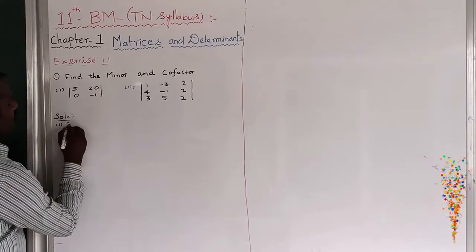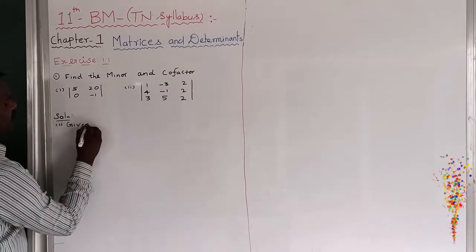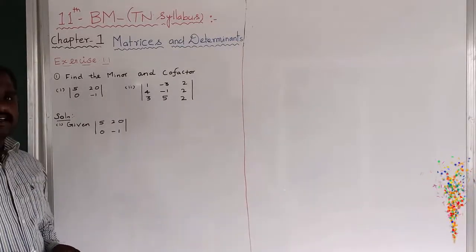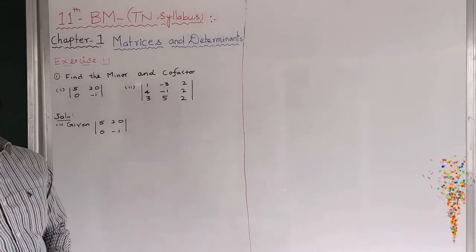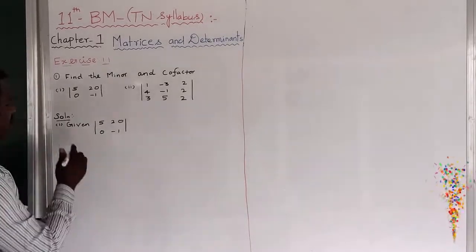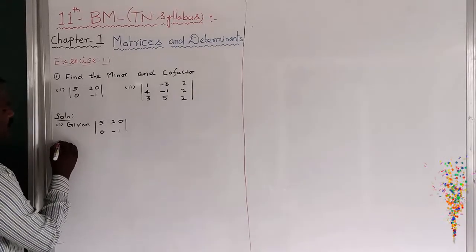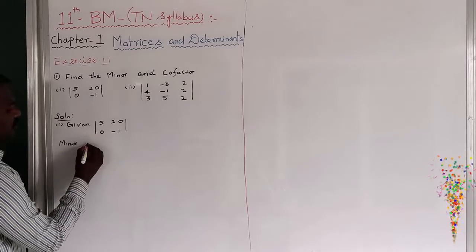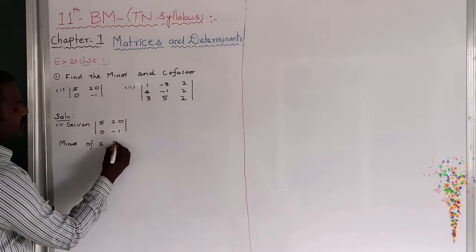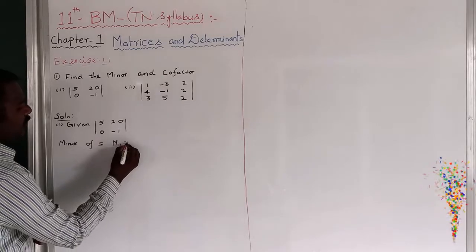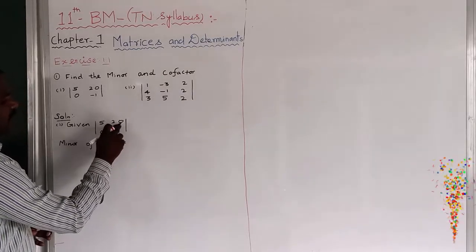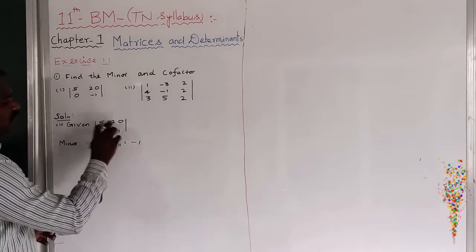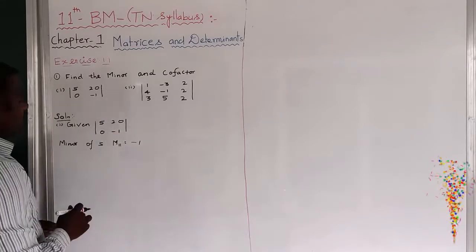So given the 2 by 2 determinant is 5, 20, 0, and minus 1. First I have to find out the minor. Minor of 5 — that is M11. For M11, I want to remove the first row and first column. So what is the remaining? Minus 1. This is the minor.